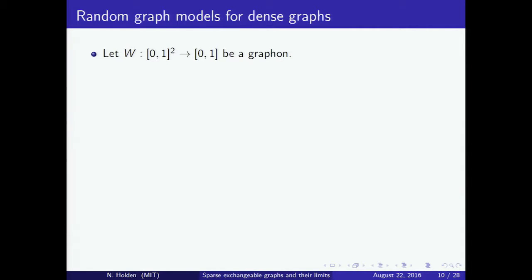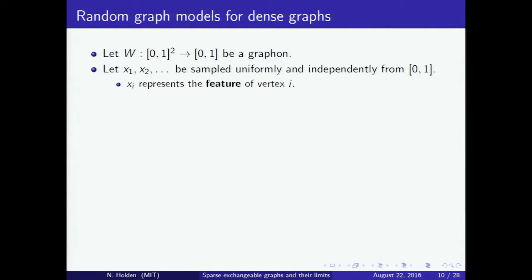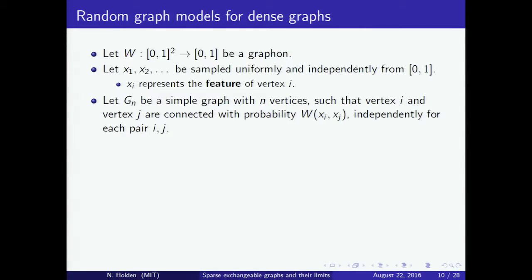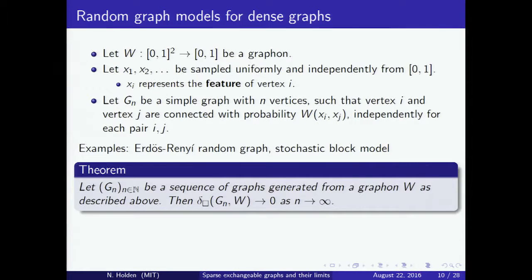Graphons can be used both to study convergence of dense graphs and to model dense graphs. We let W be a graphon on the unit square with values between 0 and 1, let X1, X2, … be sampled uniformly and independently from the unit interval — Xi representing the features of vertex i — and let GN be a graph where vertex i and vertex j are connected with probability W(Xi, Xj). Several models arise as special cases: an Erdős–Rényi graph corresponds to a constant graphon, and the stochastic block model to a graphon constant on rectangles. The sequence GN will converge to the limiting graphon in the cut metric.